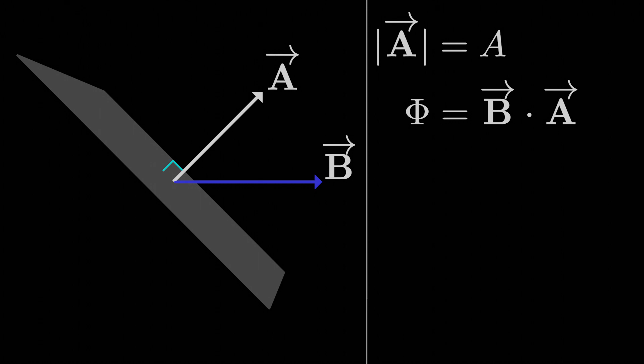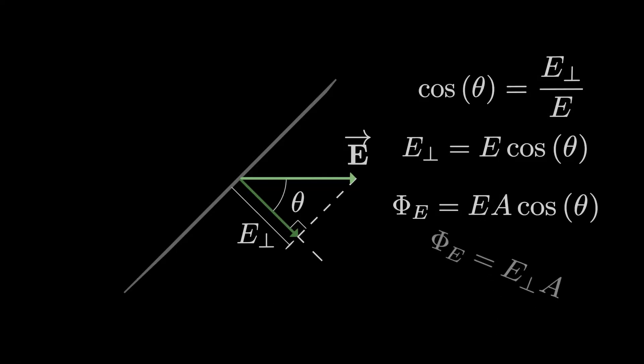If we happen to know the angle theta between the B and A vectors, we can just say the magnetic flux phi is the magnitude of the magnetic field times the area times the cosine of theta. That means the magnetic flux is actually a scalar quantity, just a number in exactly the same way that electric flux is a scalar.